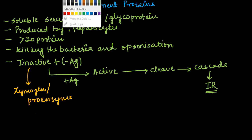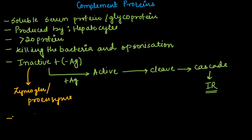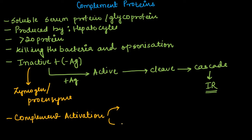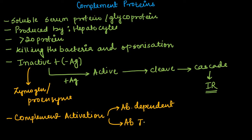If we talk about activation, complement activation mainly follows two pathways. First is the antibody-dependent pathway, and second is the antibody-independent pathway. In an antibody-dependent pathway, the complement protein gets activated after the involvement of antibodies. Whereas in the antibody-independent case, there is no involvement of antibody in the whole activation.